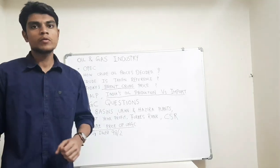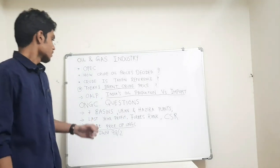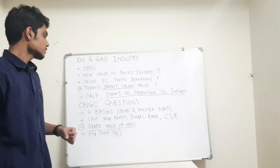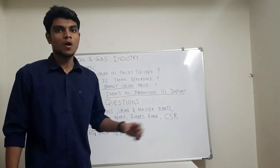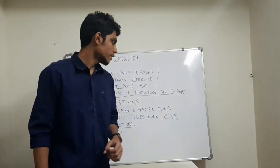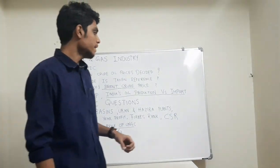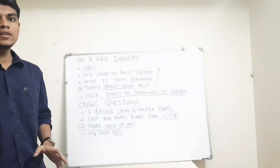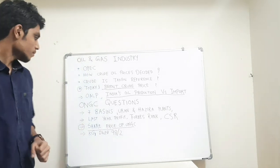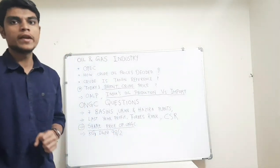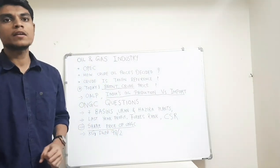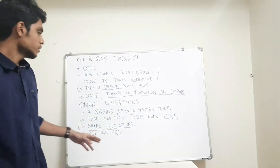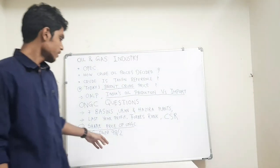They are also asking questions related to company like where are seven basins of India, Uran and Hazira plants of ONGC, last year's company's profit Forbes rank corporate social responsibility. How much ONGC has spent last year in CSR? Share price of ONGC, today's share price of ONGC on your interview day. KG DWN 98 oblique 2. It is the latest eastern offshore project of ONGC and it is its biggest project till now. And ONGC is currently working on it. So you have to refer it too.